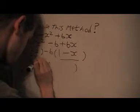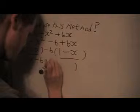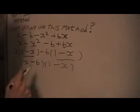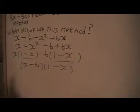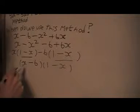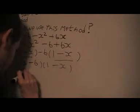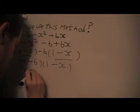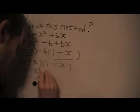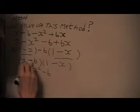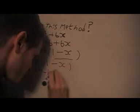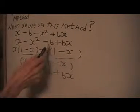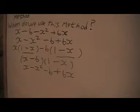Since (1 - x) is a common factor, we put (x - b) in the other bracket, giving (1 - x)(x - b). Multiplying out, we get x - x² - b + bx, which is the same as what we started with, just rearranged. So we've factored that correctly.